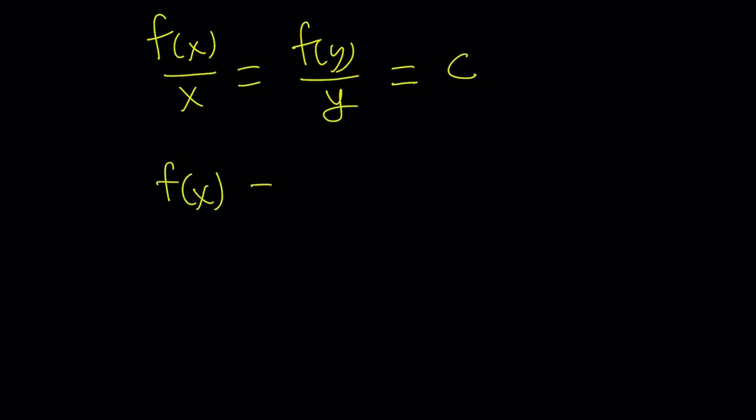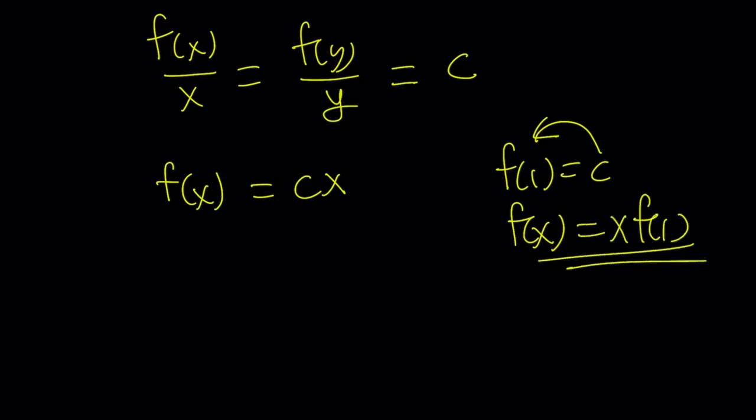F of x from here equals cx. C is a constant. And guess what? If you replace x with 1, you're going to get f of 1 equals c, which means c equals f of 1. So if you want, some people are going to do that. F of x can also be written as x times f of 1. Same thing, but I like this better.